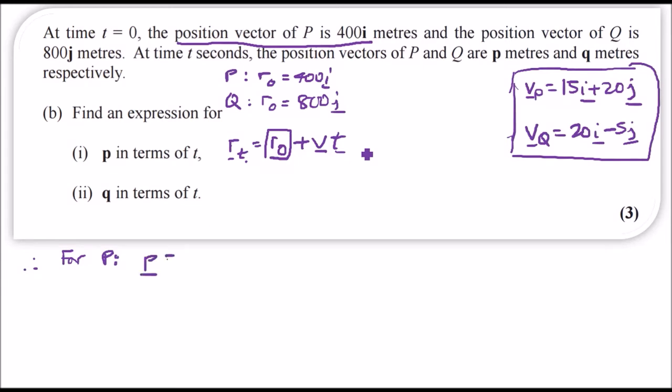The position vector p equals r0 which is 400i plus our velocity for P which was 15i plus 20j times t.